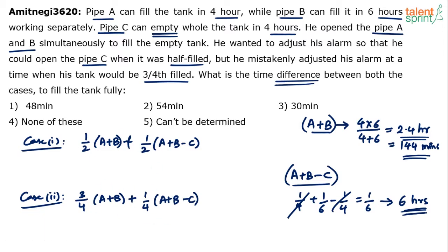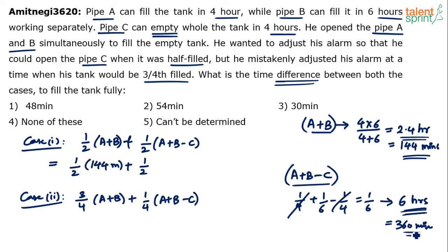Now substitute the values and calculate the difference. In case one, the time required is half of 144 minutes plus half of 360 minutes. Half of 144 is 72, and half of 360 is 180. So the total time for case one is 72 plus 180 equals 252 minutes.